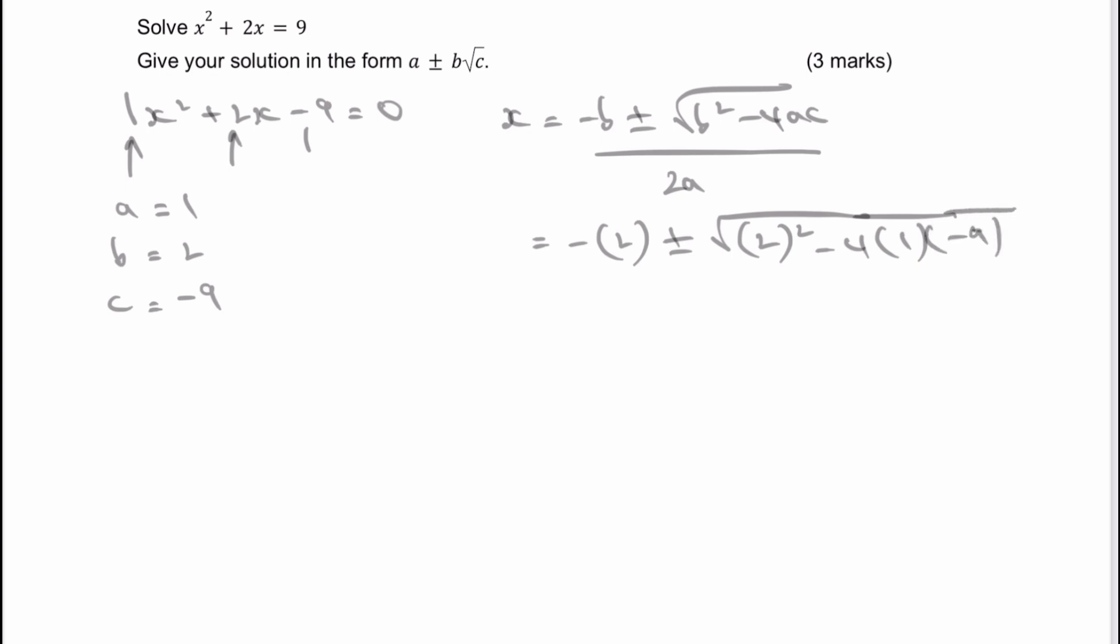Because you'll notice I've got -4 here and I've also got -9 there. And because I've got those two, it does make my life a little bit harder if I'm using a calculator straight away. Okay, so let's just finish writing this and we get something like this.